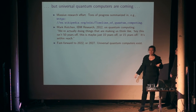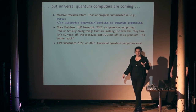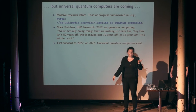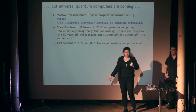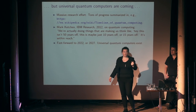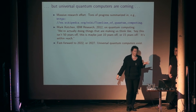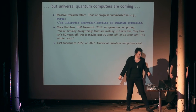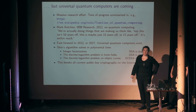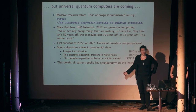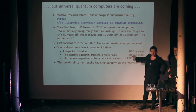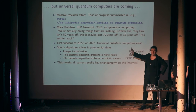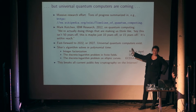Now let's fast forward 10 to 15 years — so 2022 or 2027 — and we now have a big quantum computer. What are the effects on crypto? All the main things we just saw: RSA — dead. Diffie-Hellman — dead. Elliptic curve — dead. These are the Diffie-Hellman things we saw on the previous slide. This breaks every public key cryptography on the internet. And public key was what we needed so that people don't have to meet and agree on a secret key in private.